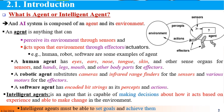An intelligent agent can be a real-world entity or an object — either a physical or biological object.